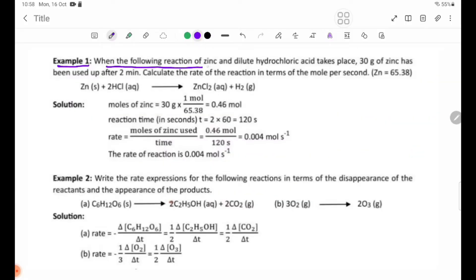The following reaction of zinc and dilute hydrochloric acid takes place. 30 grams of zinc has been used after 2 minutes. Calculate the rate of the reaction. The equation is Zn(s) + 2HCl(aq) → ZnCl2(aq) + H2(g).